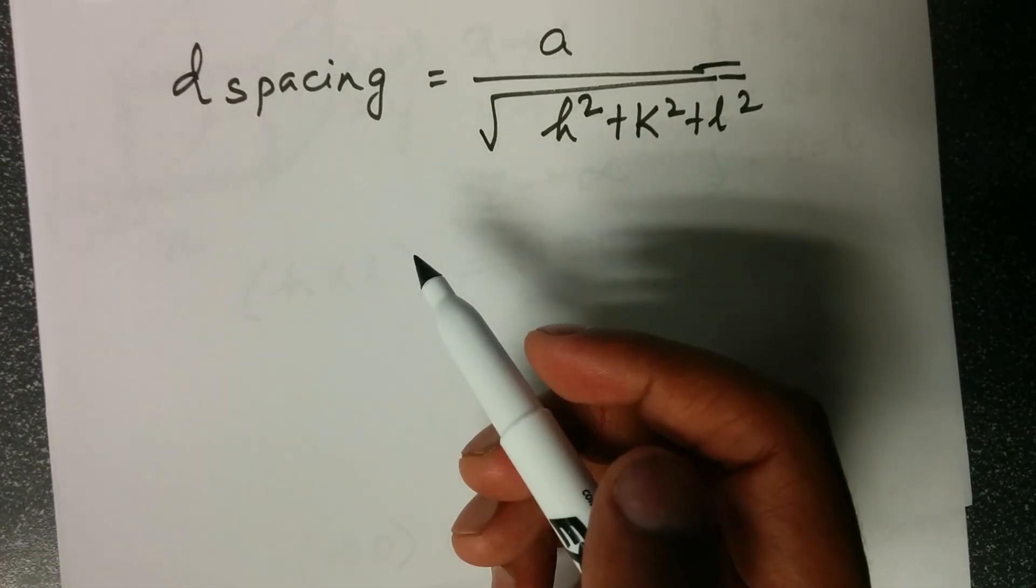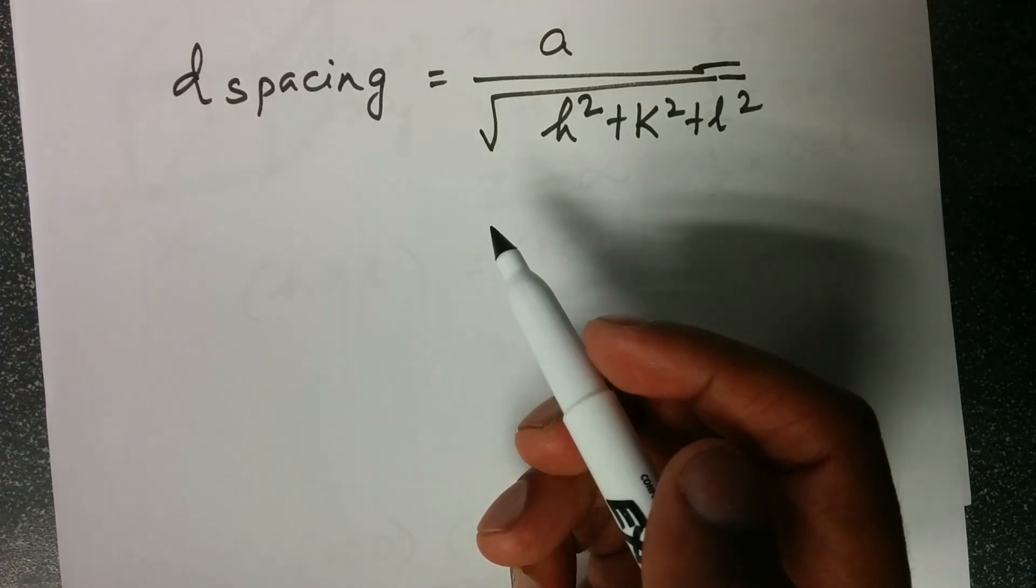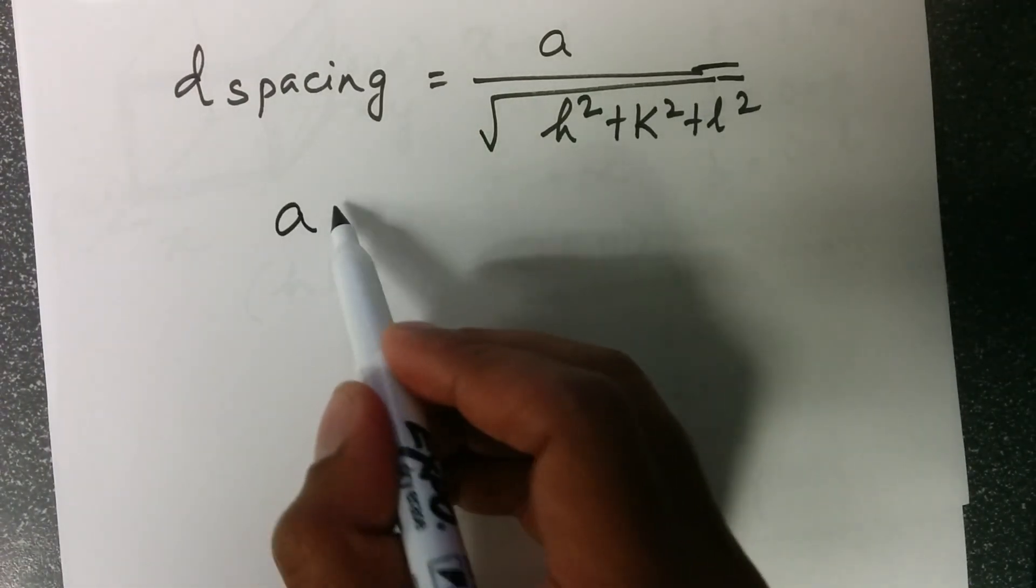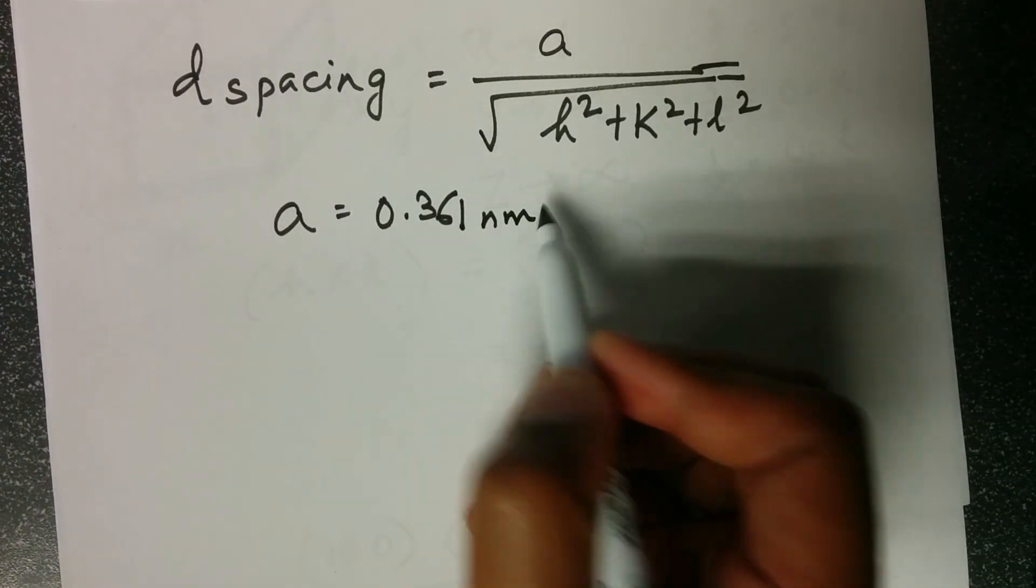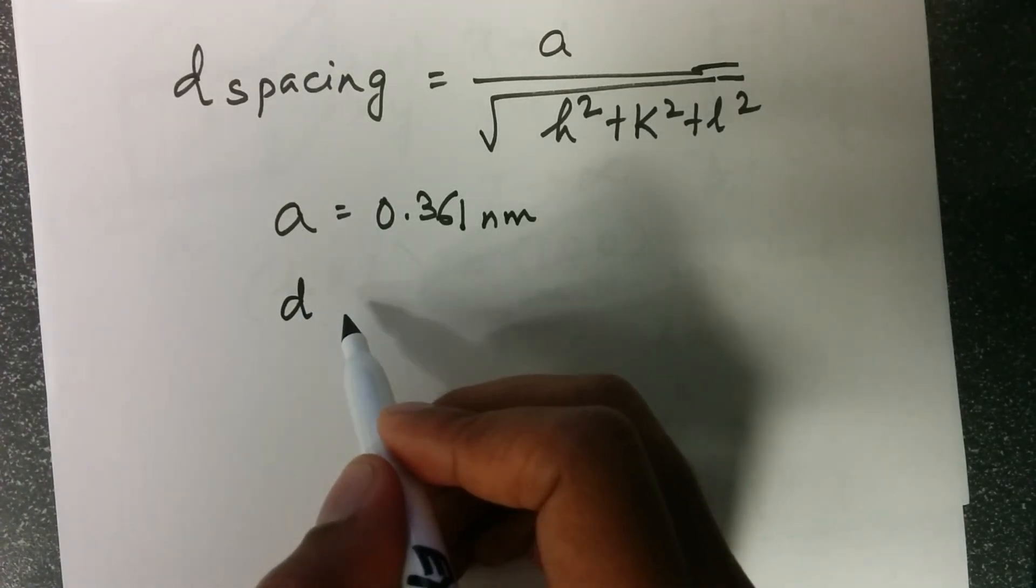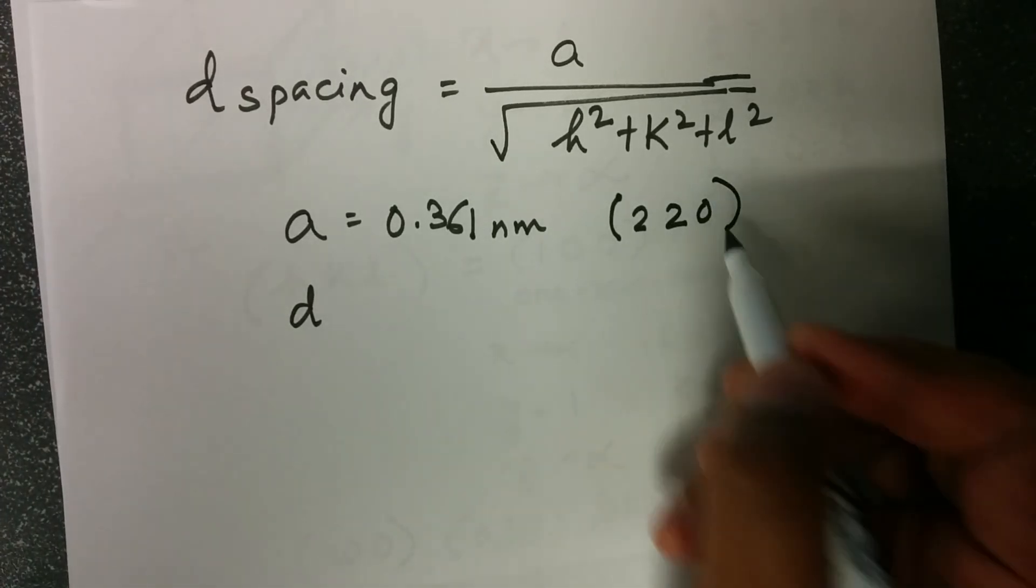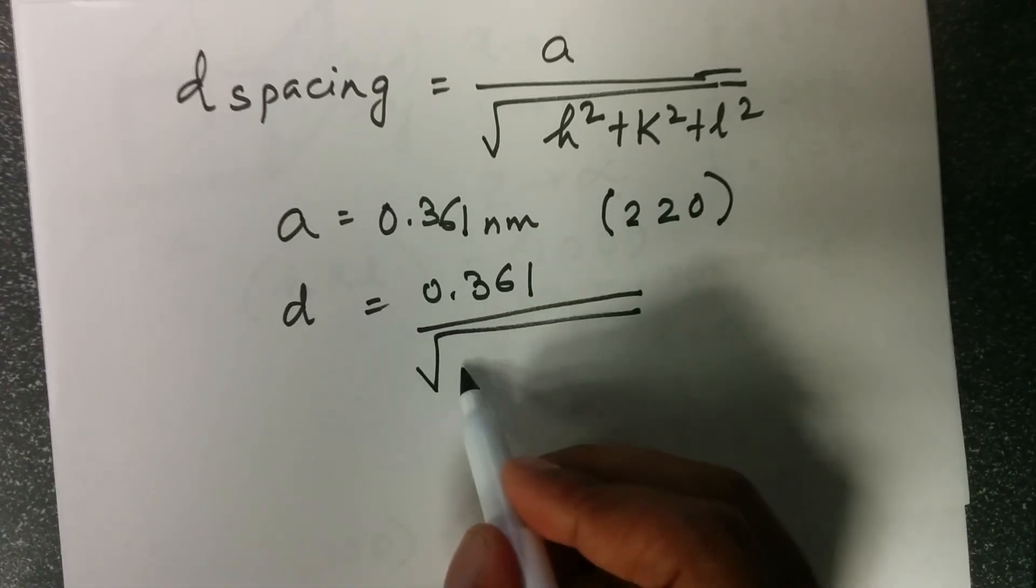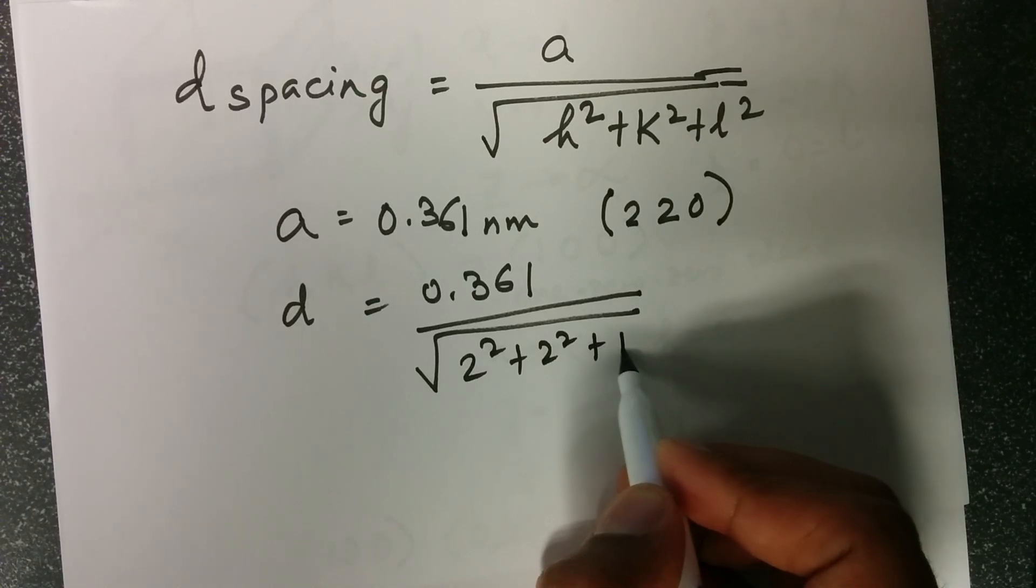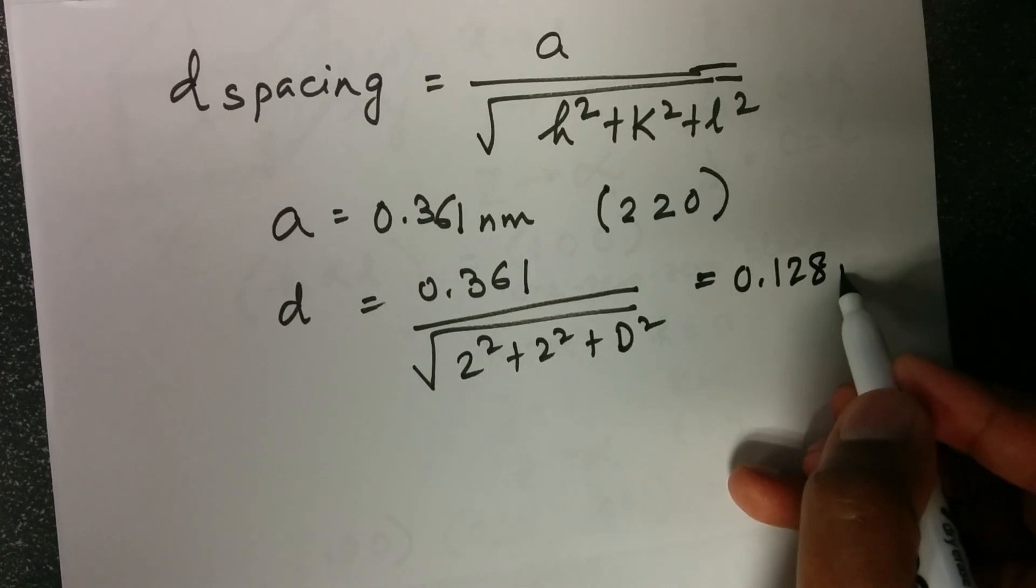As an example, if we have a crystal structure whose side of the cube is 0.361 nanometer, the d-spacing for (2, 2, 0) plane would become 0.361 divided by √(2² + 2² + 0²), which will be 0.128 nanometer.